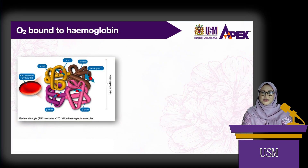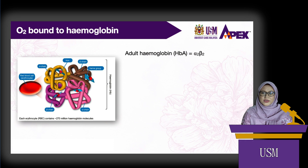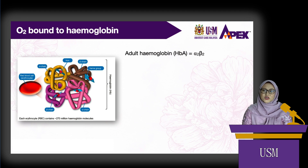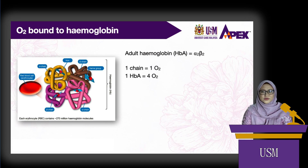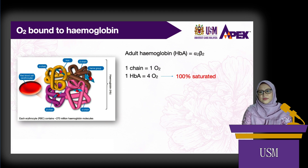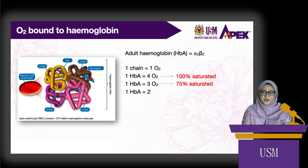Hemoglobin is a globular protein consisting of 4 subunits. Each subunit contains a heme moiety, which is an iron-binding porphyrin, and a polypeptide chain designated either alpha or beta. Adult hemoglobin has 2 alpha chains and 2 beta chains. Each subunit can bind 1 molecule of oxygen, so 1 molecule of hemoglobin can hold 4 molecules of oxygen. When 4 molecules of oxygen are bound, hemoglobin is 100% saturated; when 3 are bound, it is 75% saturated; and when 2 are bound, it is 50% saturated.